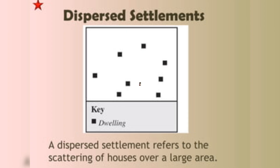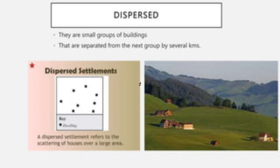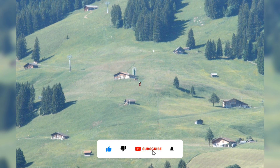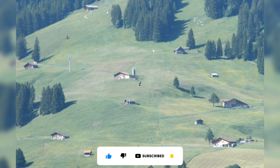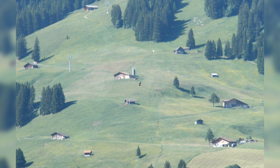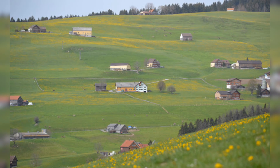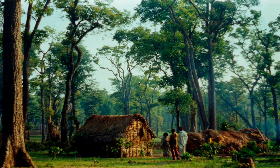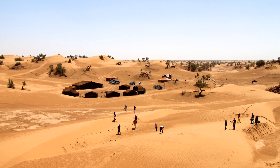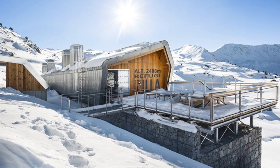Second one is dispersed or scattered settlement. In these settlements, houses are spread out over a large area with significant distances between them. This type of settlement is found in areas with rough terrain or poor soil conditions, and mainly found in hilly areas, forests, deserts or regions with extreme climate.